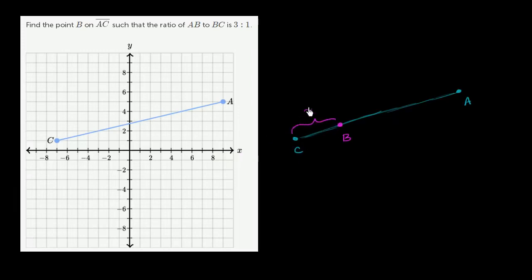So if this distance is x, then the distance between B and A is going to be 3 times that. So this will be 3x, such that the ratio of AB to BC is 3 to 1. So that would be the ratio. Let me write this down.